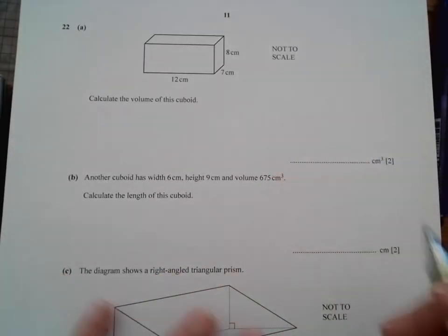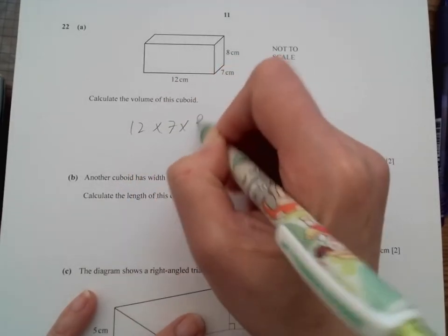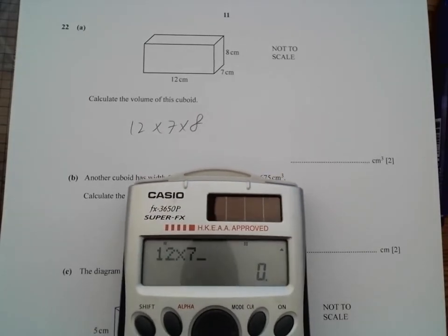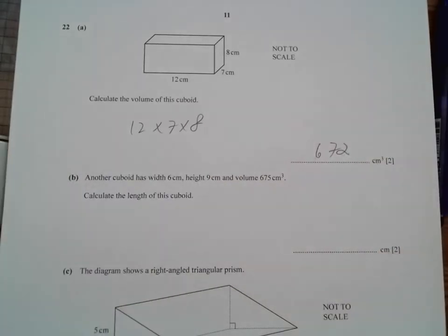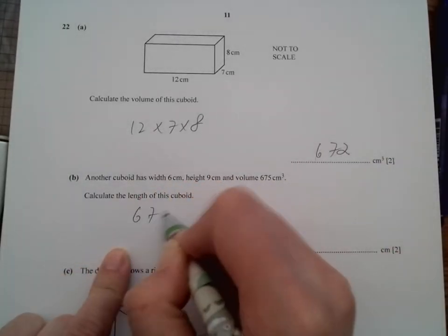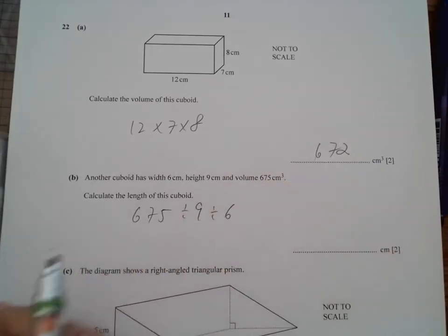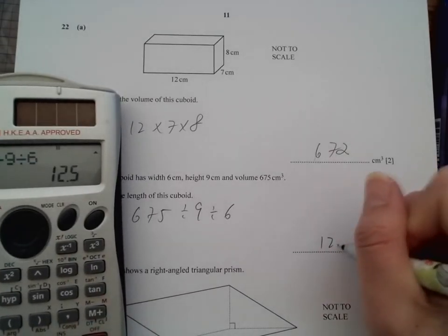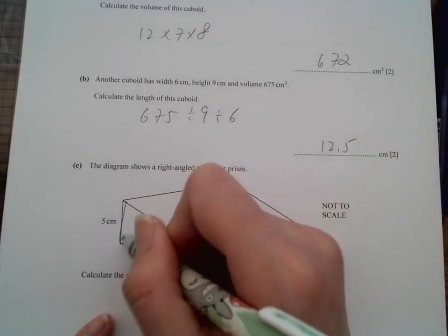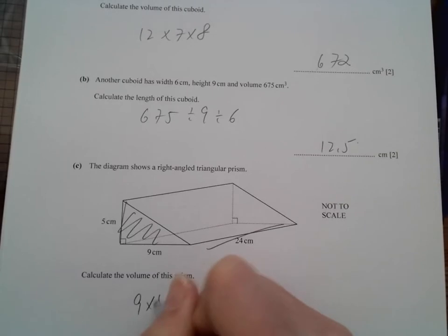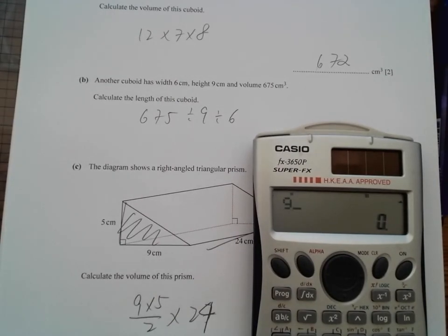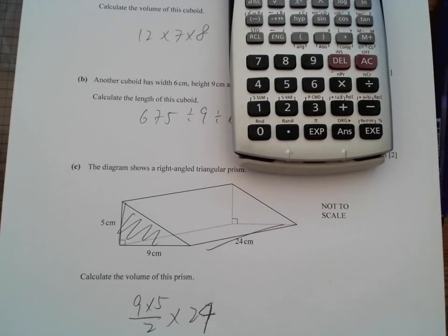All right, so this is our last page. So work out the volume: 12 times 7 times 8. This time I learned, I use my calculator. So 12 times 7 times 8, I got the volume 672. Another cube, another cube like this, and then find the length of it. So 672 divided by 9 divided by 6 is the answer. So 12.5 as the last answer. The volume of the pyramid, so we need to have the base area times the height. So 9 times 5 divided by 2 times 24 here. So calculator again, this time you saw it: 9 times 5 divided by 2, and then you times 24, and 540 is the answer. And this is the end of the paper.